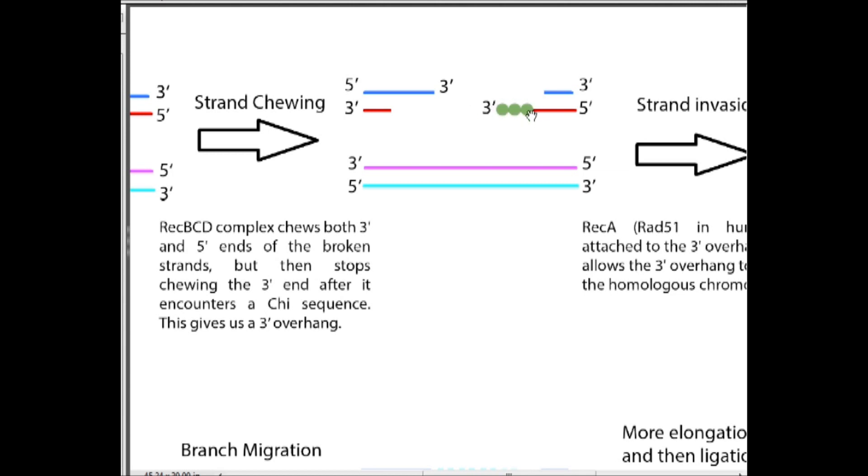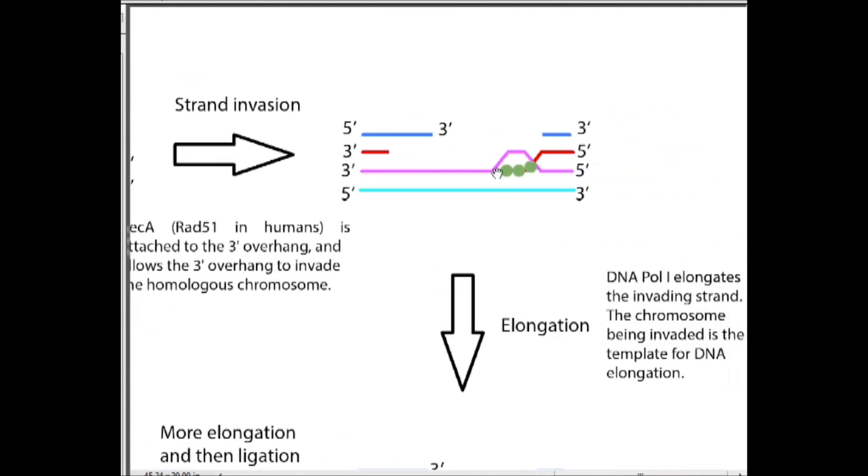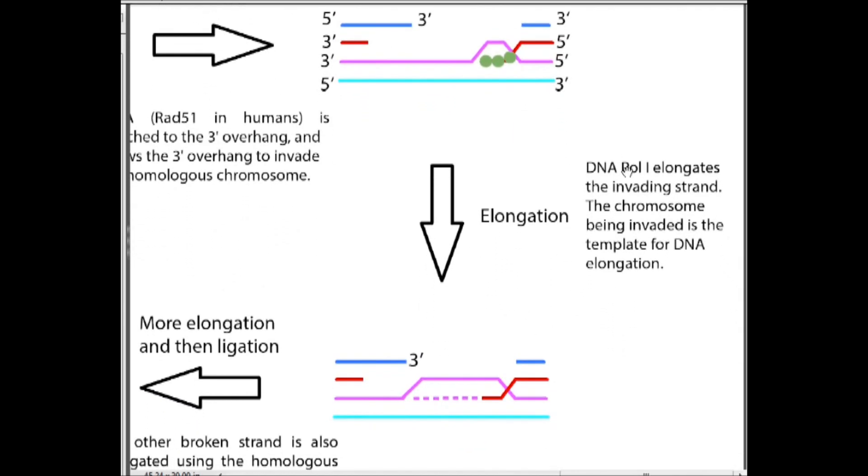It's finding a place just like itself on this chromosome. And when it finds that place, it's going to base pair with that place. That allows DNA polymerase to come in, DNA polymerase one, and elongate this strand. DNA polymerase one is important to keep in mind here because it's a high fidelity DNA polymerase.